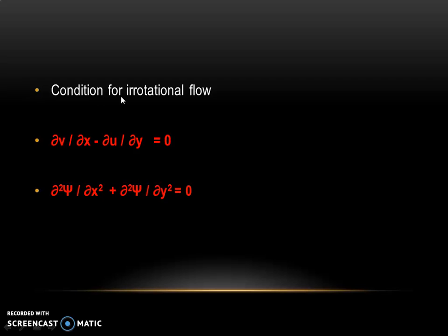Next is the condition called irrotational flow. For irrotational flow, ∂v/∂x - ∂u/∂y = 0, and ∂²ψ/∂x² + ∂²ψ/∂y² = 0. When both these conditions are satisfied, we say that the flow is irrotational.